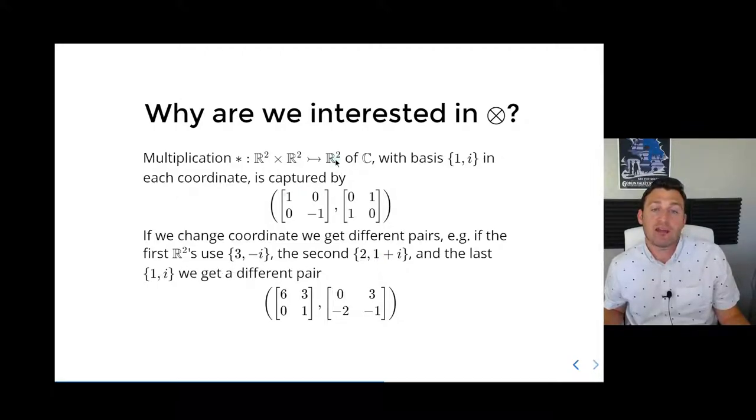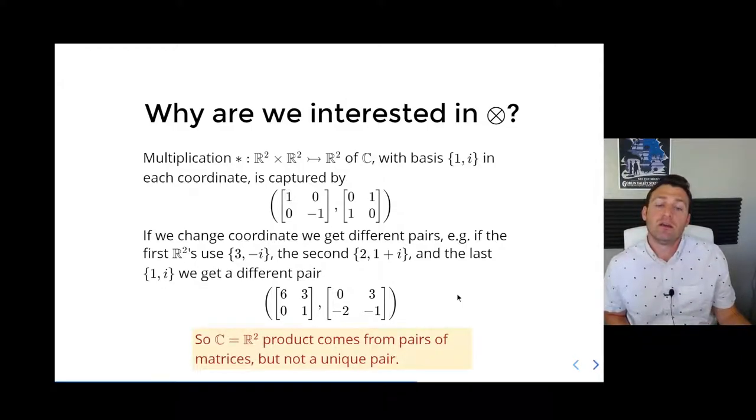Having assigned these three different bases and applying the product, we see that the matrices that would arise are different. For example, we get a 6 here because 3 multiplies by 2. We get a 3 here for a more complex interaction. Multiplying out the rest gives you these formulas. You can change this to other values and see that you get several pairs of matrices that all seem to capture the concept of multiplication of complex numbers, but by seemingly different pairs of matrices. The problem is a lack of uniqueness.